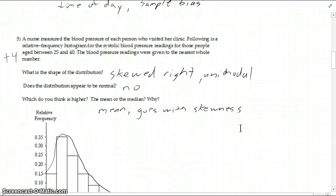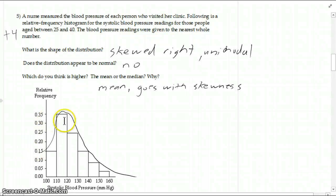And number five, this is unimodal, skewed right. If you said unimodal, I think I counted it right. If you had skewed right, I counted it right. If you had both, I really like that. Does the distribution appear to be normal? No, because it's skewed. It's not symmetric.